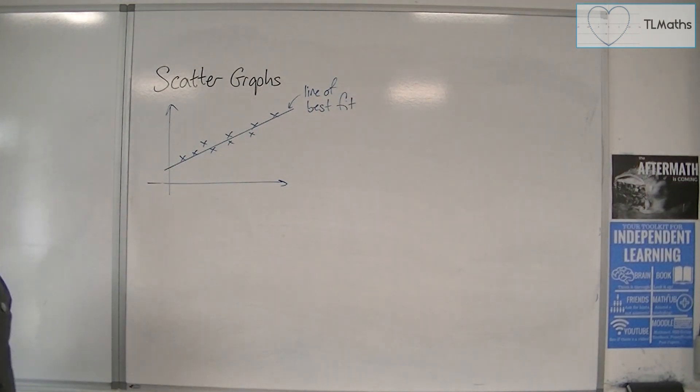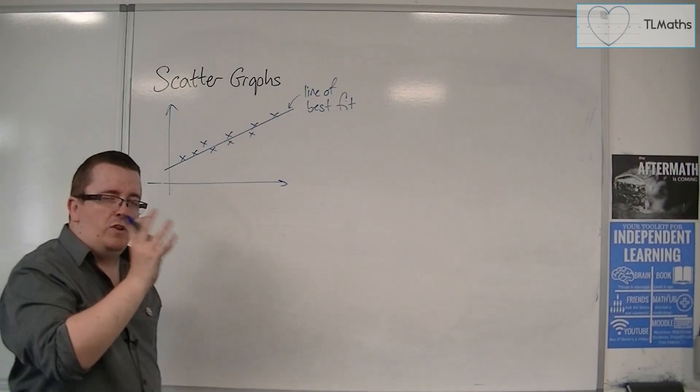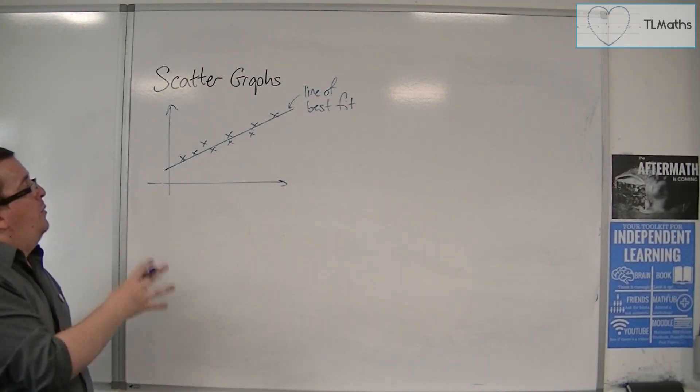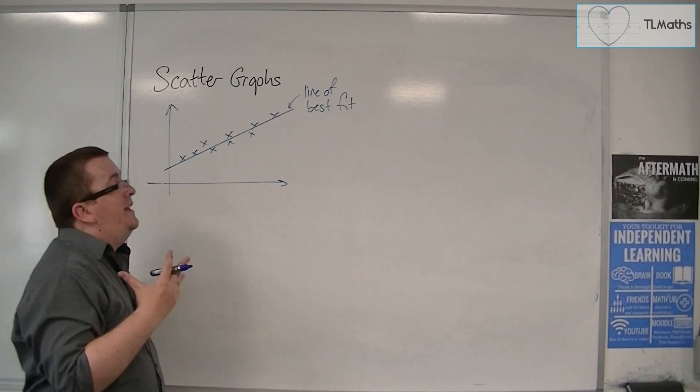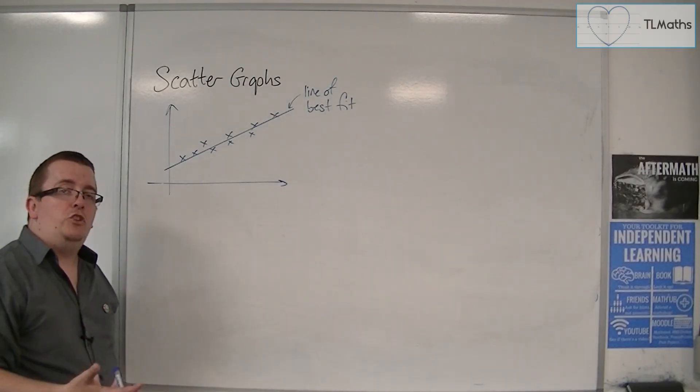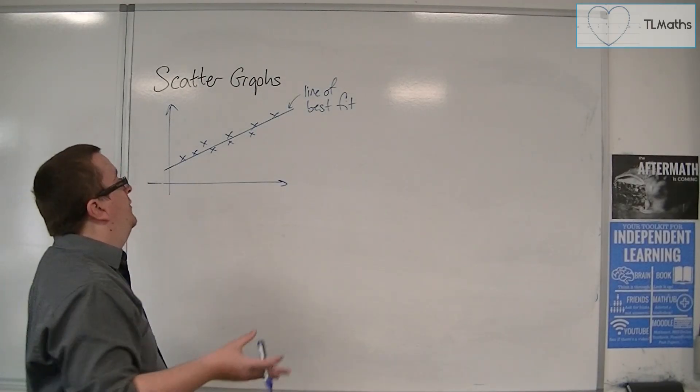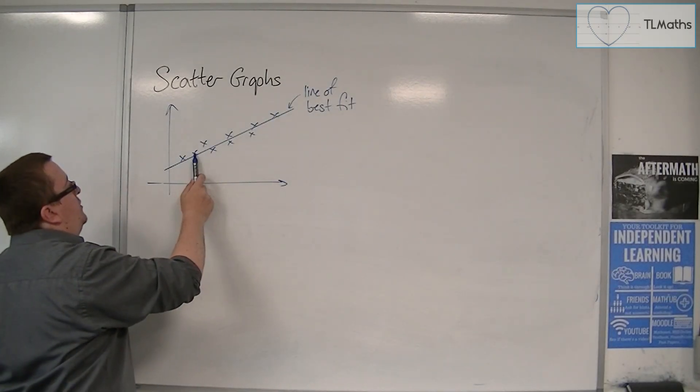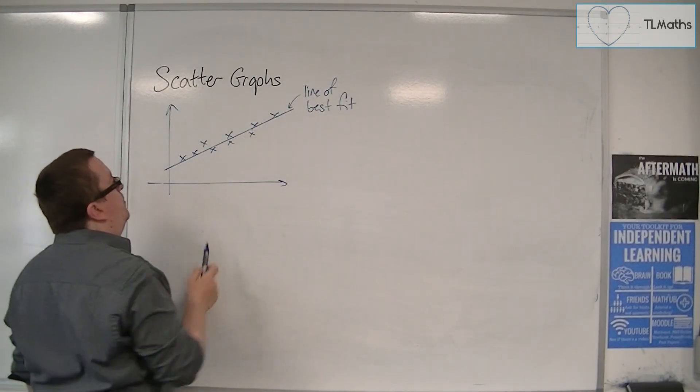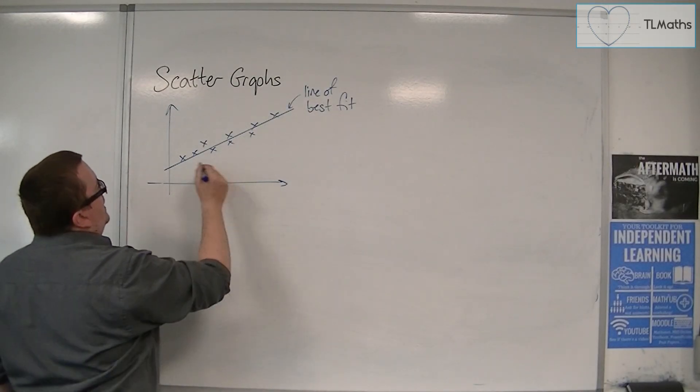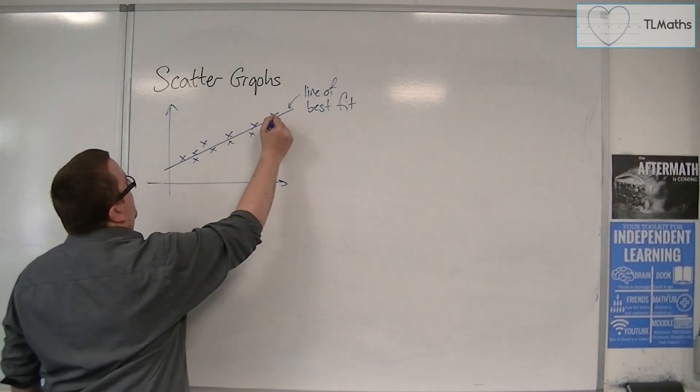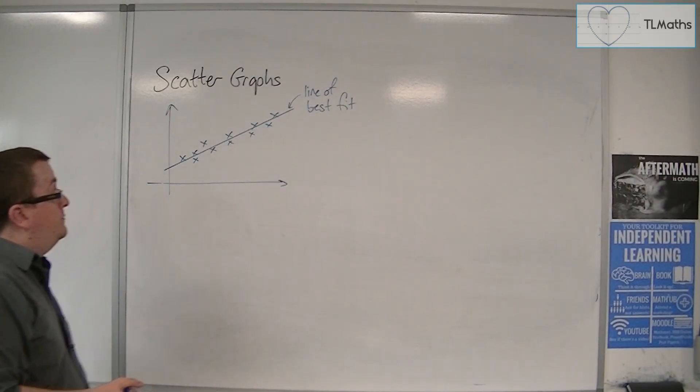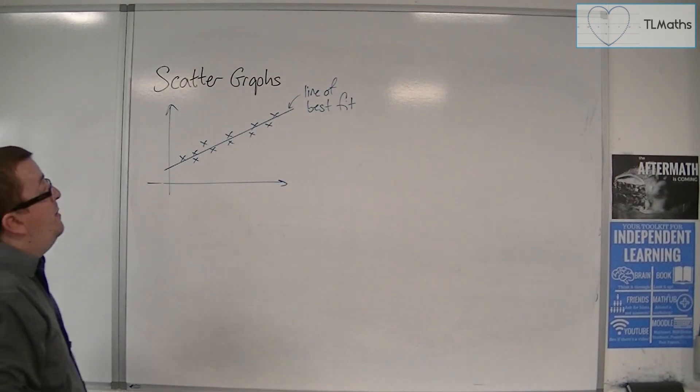Now, when drawing a line of best fit, usually what you try and do is you try to make sure that it goes through as many of the points as possible. And in general, you also try to make sure it's got the same number of points either side. Now, I kind of cheated there. I've got one, two, three, four, five, six, seven, eight, nine points. So let's say I've got another couple on this side just to even it up. And that would be a line of best fit.